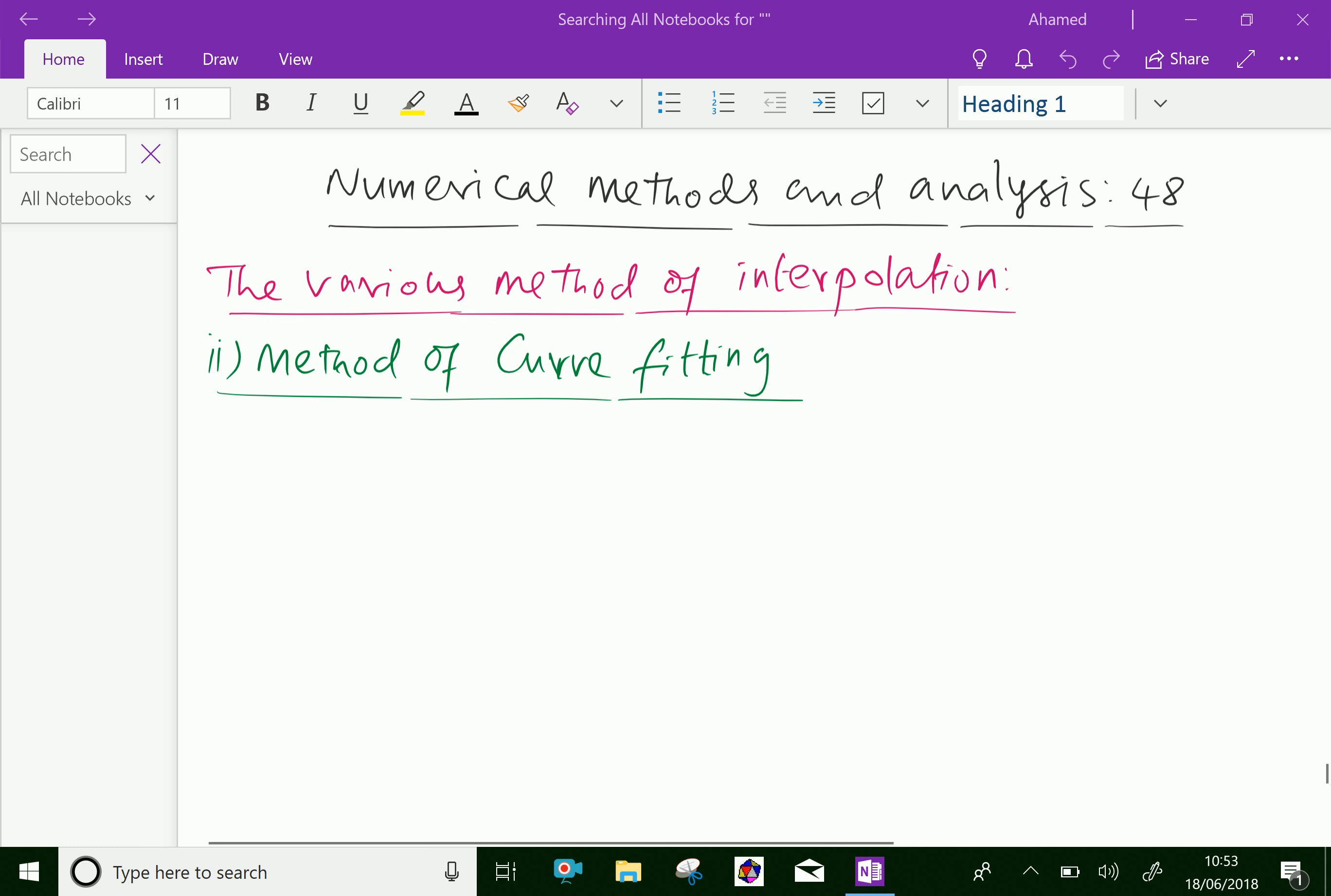This method can be used only when the form of the function is known to us, means the function must be given. Then by the method of least square, we can fit the curve of known form to the given set of observation. And with the help of fitted curve, we can calculate the unknown values.